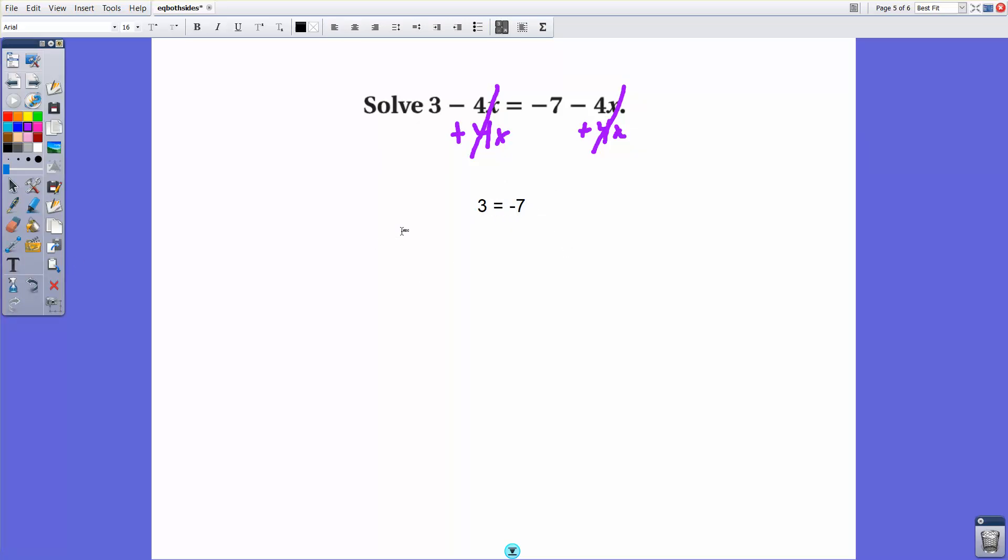This is a false statement, which in mathematics we call a contradiction. If we end up with a contradiction while solving equations, that means that there are no solutions. No solutions is not the same as x equals 0. So make sure you don't make that mistake.